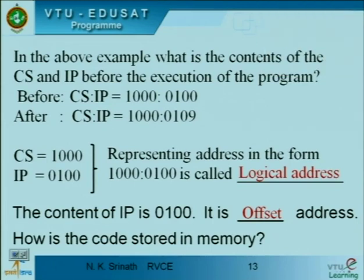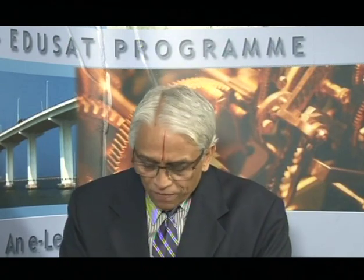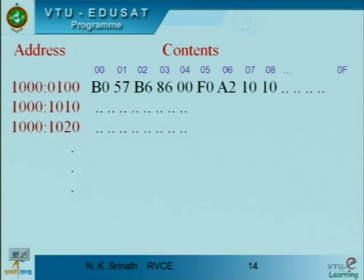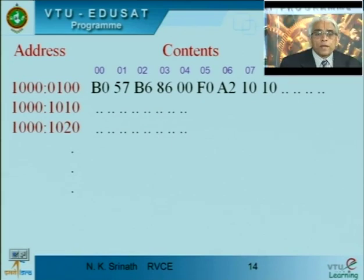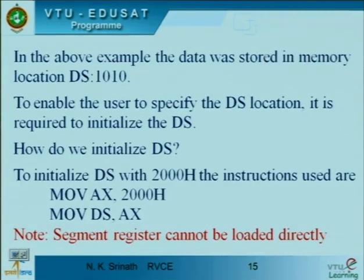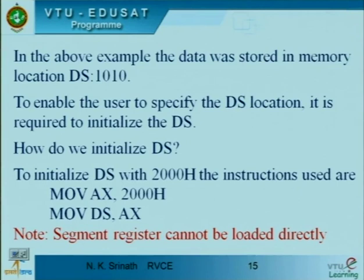How is the code stored in memory? We need to understand how data and the program are stored. The code from the second column must be stored in memory. For example, at 1000:0100 the value B0 is stored, next location is 57, then B6, then 86, and so on — each byte in consecutive memory locations. This is how it is stored: the code segment spans from 1000:0100 to 1000:010F in the first line, 1000:1010 in the second line, and so on.